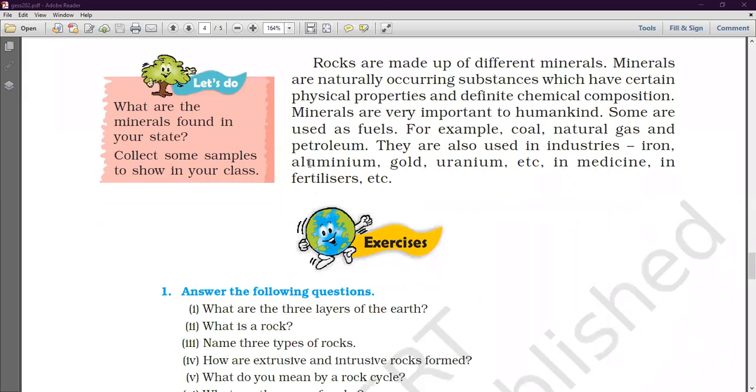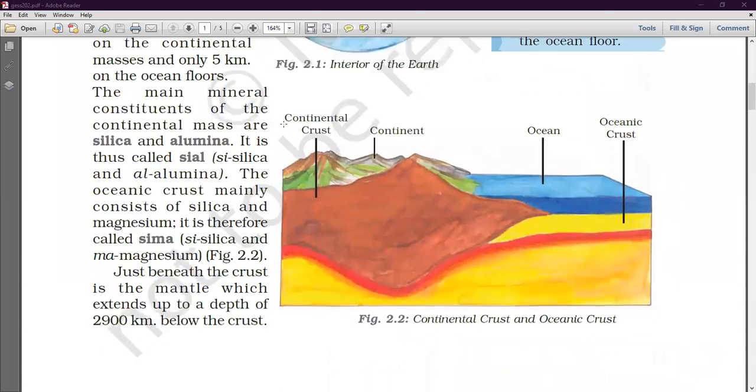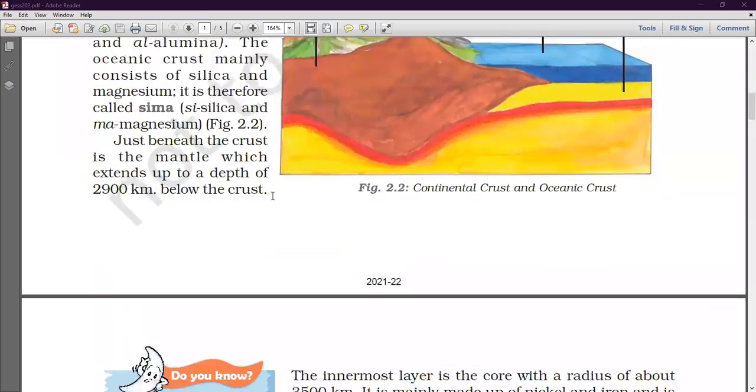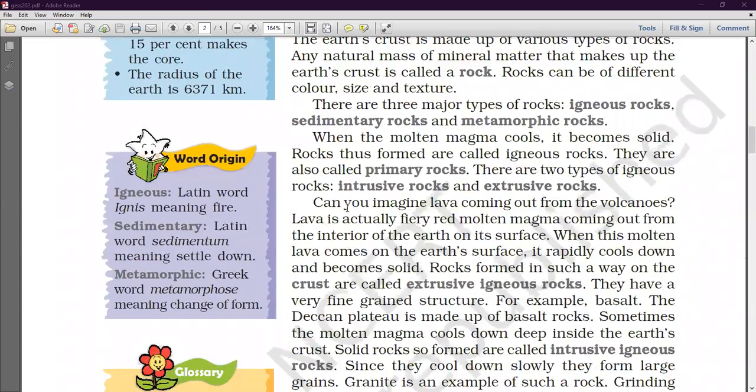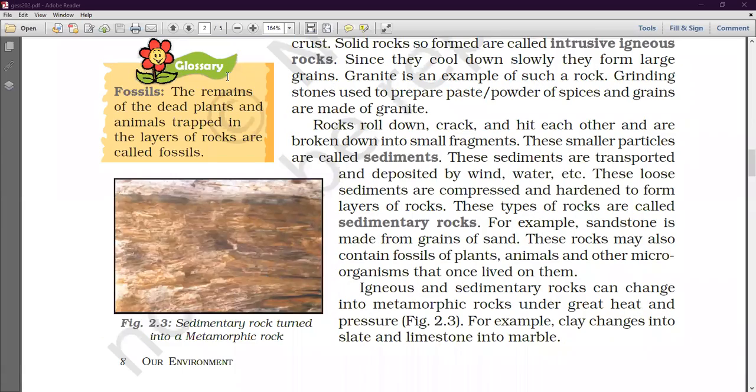So, this is all about the Chapter 2 inside of our earth. In this chapter we had so many. In this chapter we had the interior. Of earth we had in 3 layers. Then, how rocks are formed. Then, minerals. These are just that you should remember that. So, this is all about the Chapter 2. And, it is all about Chapter.